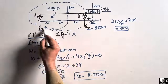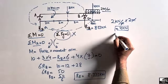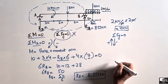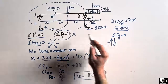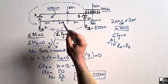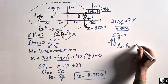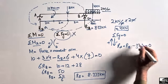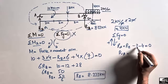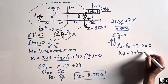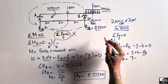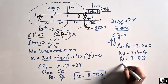Now to find RA, we use the summation of vertical forces equal to zero. Upward forces are taken as positive, downward forces as negative. So: RA + RB − 3 − 4 = 0. RA = 3 + 4 − RB = 7 − 8.33.